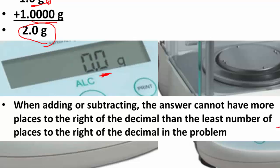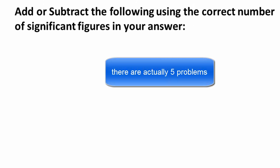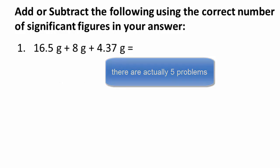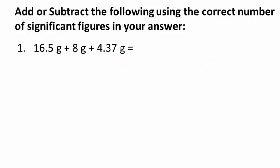This rule is only for addition and subtraction — it is different from multiplication and division. Let's do a few problems. Add and subtract the following using the correct number of significant figures. The first one: 6.5 plus 8 plus 4.37. We look at the places to the right of the decimal: 6.5 has 1 place, 8 has 0 places, and 4.37 has 2 places. So we can only have 0 places to the right of the decimal. Adding all these gives 28.87.